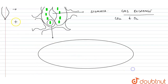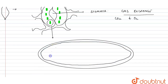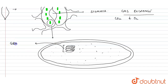The chloroplast is a double membrane structure. The matrix of the chloroplast is called the stroma. Inside the chloroplast, we have thylakoids arranged in a coin-like stack called grana, and each individual unit is called a thylakoid.